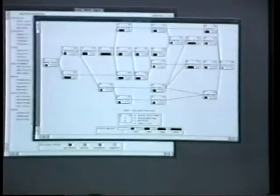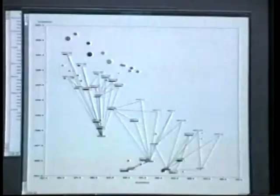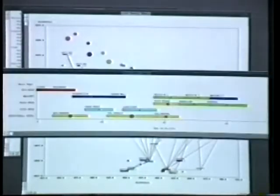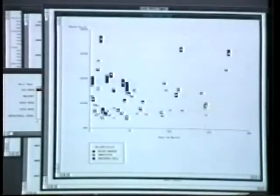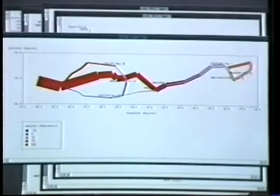Every day, we need to explore relationships among increasingly diverse combinations of information. To do this effectively, we need graphics that can visually integrate many types of information, including combinations of quantitative, relational, temporal, hierarchical, geographic, categorical, or other diverse types of data all at one time.